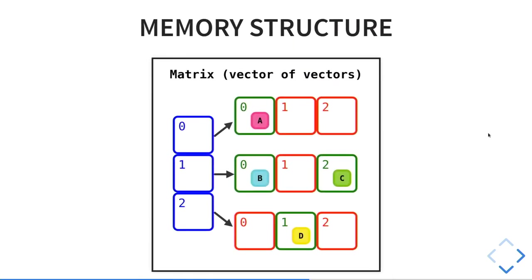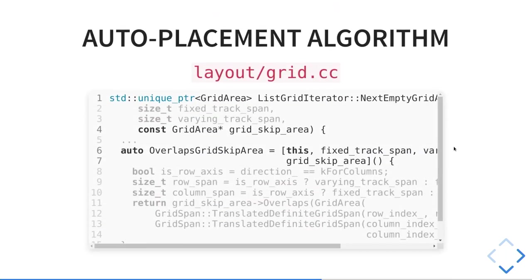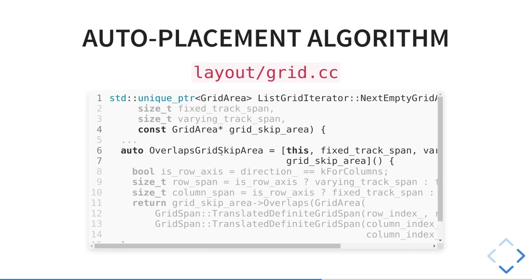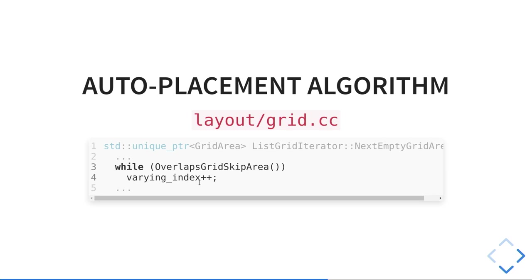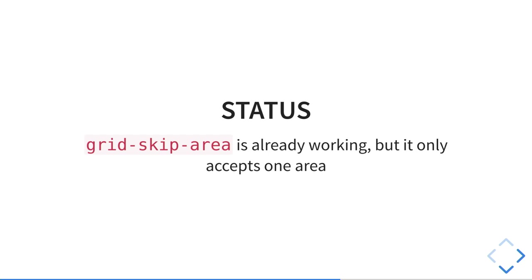In this case, if we have grid-skip-area: 2 / 2, we want to mark this as skip. But we don't have that cell to mark, so we need a different alternative. There is a next-empty-grid-area method, so I implemented an overlaps-grid-skip-area method. It checks if the current position is overlapping the grid-skip-area, and if it's overlapping, it moves to the next track looking for the gap. The patches are more complex than this, but that's the gist of it. We build it and grid-skip-area is already working — it only accepts one area, but it's already working. Here's a screenshot I took while doing this: grid-skip-area: 2 / 2 and it's skipping it.